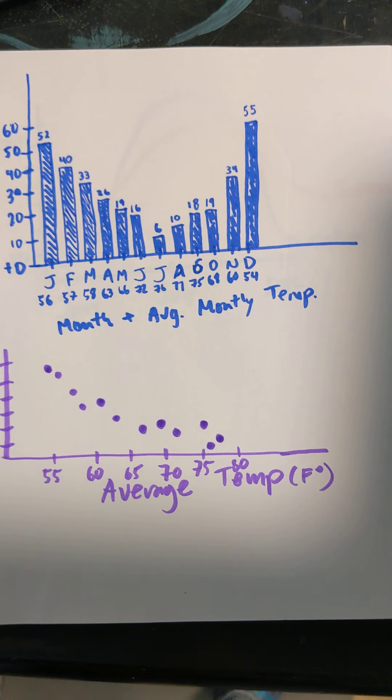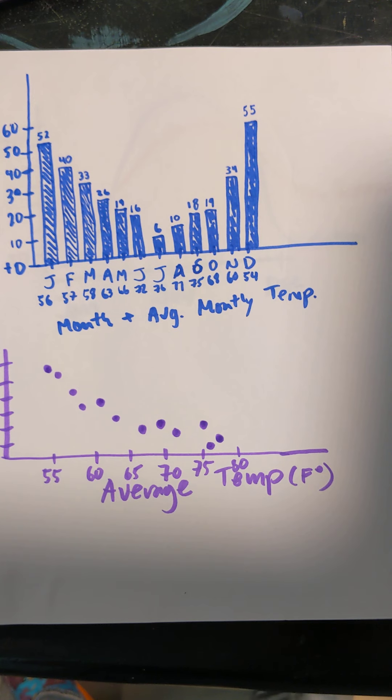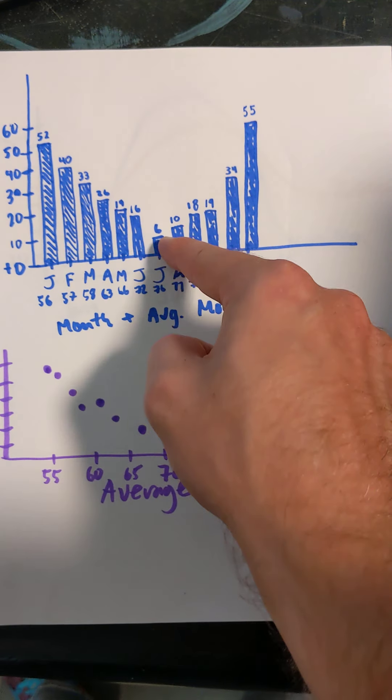So looking at this, there seems to be a strong negative and somewhat curved relationship between therms used and average monthly temperature. Now the last thing we're going to talk about is we want to describe what the graph that we just made reveals about the relationship between the number of therms used and the average monthly temperature that is not revealed in the bar chart sent to you by your utility company. Okay. So what do we get from this that we don't see here?